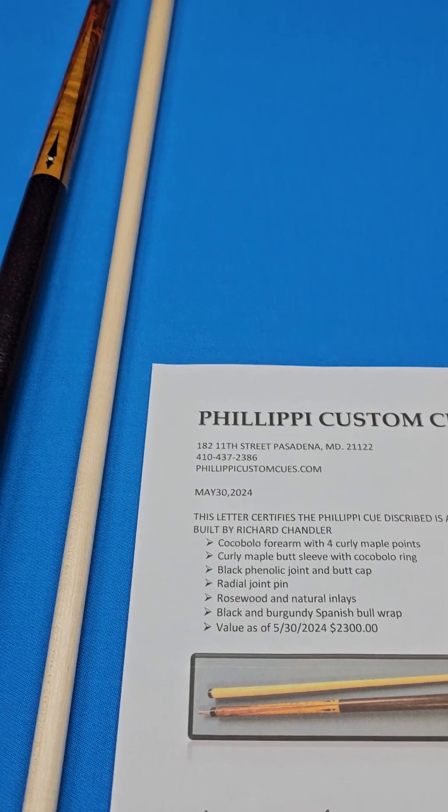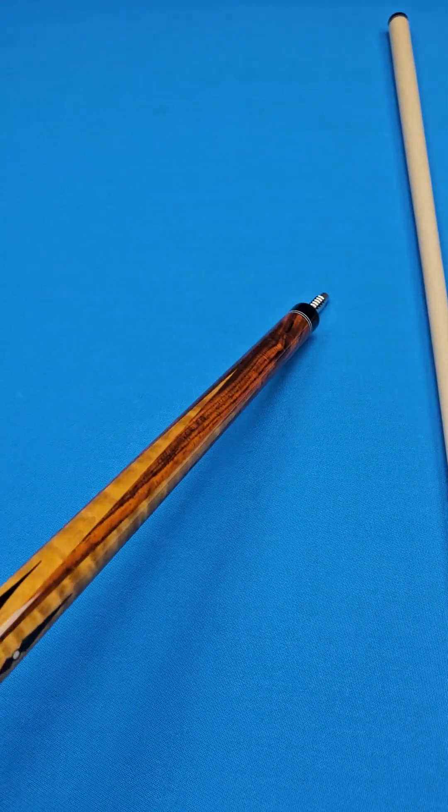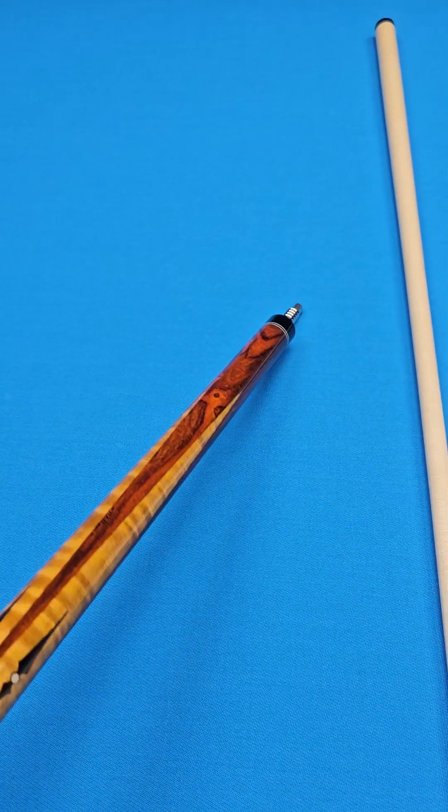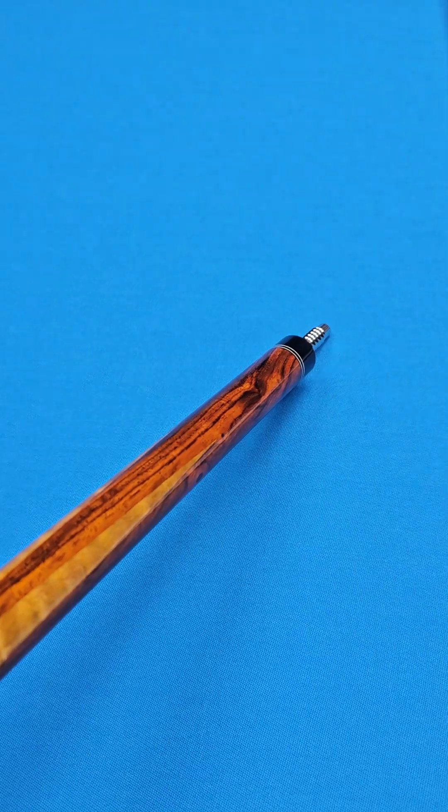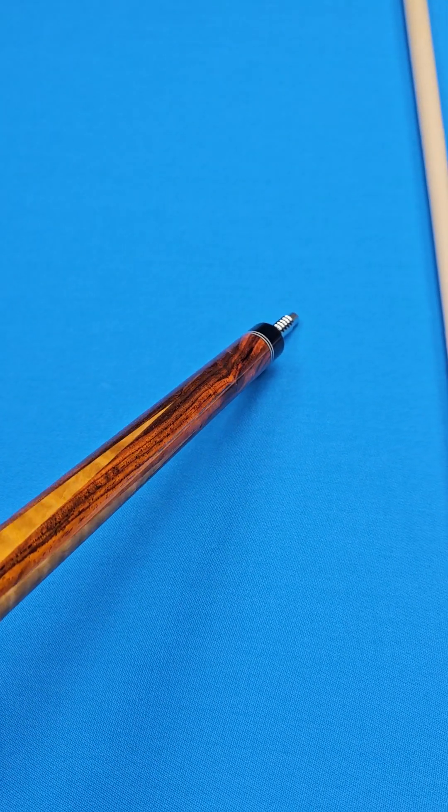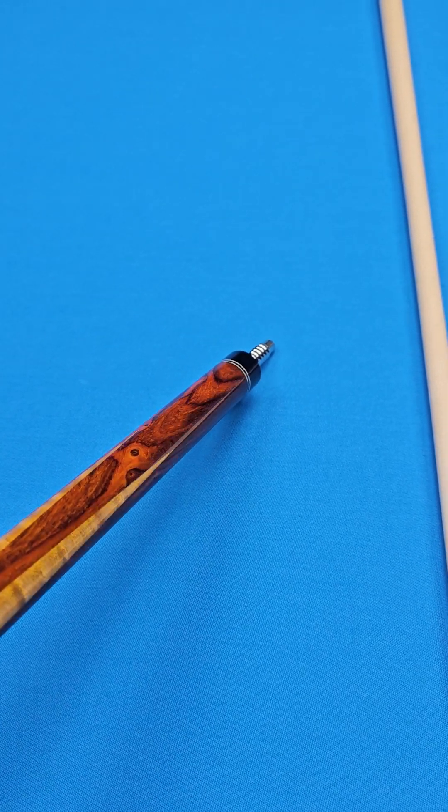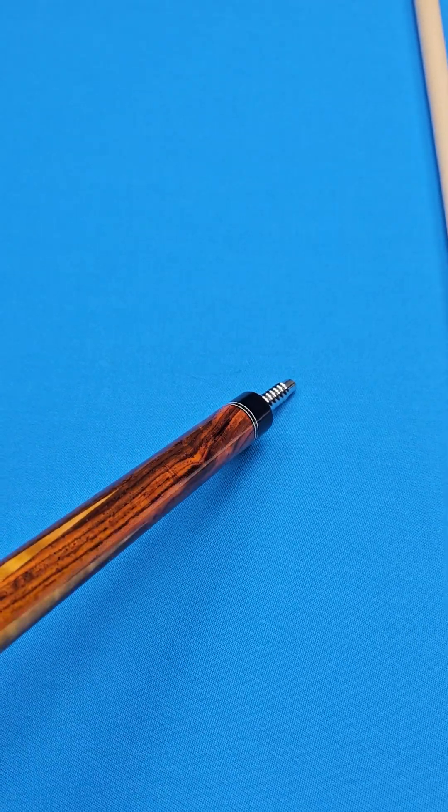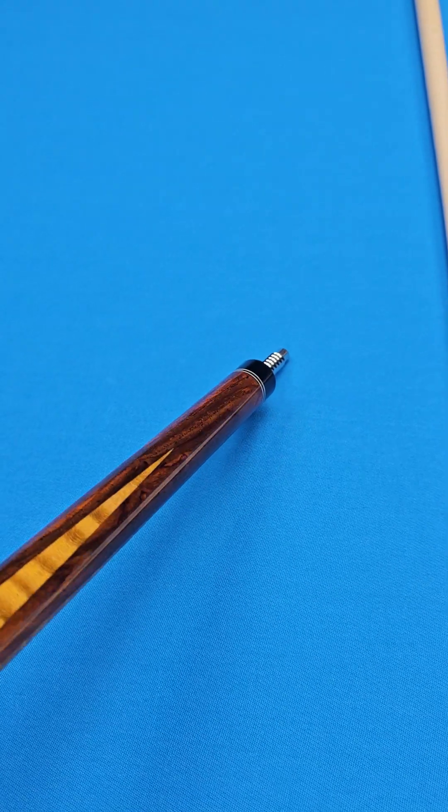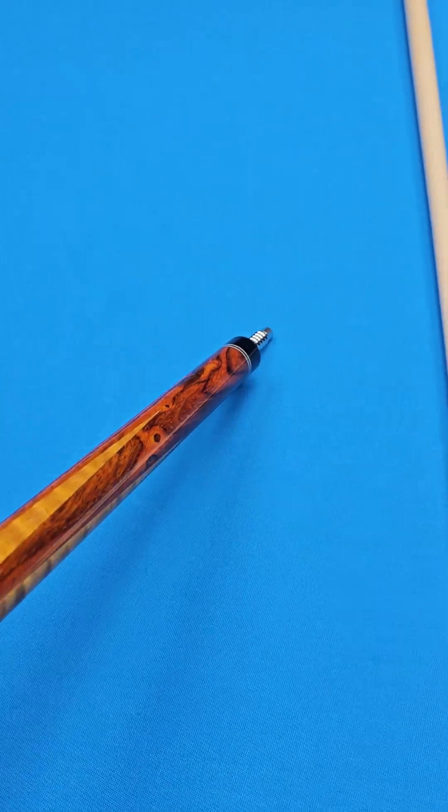Without further ado, this is a Cocobolo forearm. I would say that's what you call the Mexican Cocobolo. It's got more of that kind of burnt look to it. This almost has like an orangish look to it. So I could be wrong about that. It could be the Central American Cocobolo. He didn't specify, and this one's a little bit hard to tell, but for all practical purposes, it's Cocobolo.